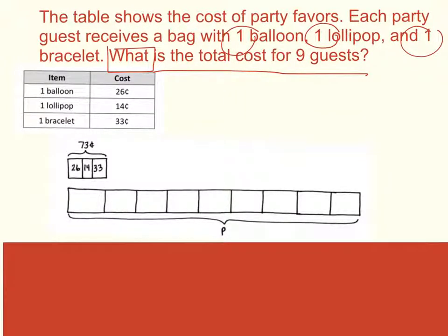Next I'll go ahead and draw a diagram to help me solve this problem. So I know that the total cost for one guest would be 73 cents. So this box represents one guest, two, three, four, five, six, seven, eight, nine guests. And then all of these together would equal my total cost for my party favors.